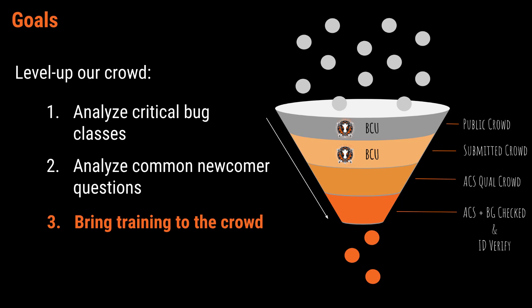ACS stands for Automated Crowd Selection — it's our algorithm used to choose researchers who get private program invites. This algorithm includes factors such as average severity of your bugs, activity, and trust metrics built when you start working with Bug Crowd. You can also get into other tiers by specializing in certain types of programs, background checking yourself, and ID verifying yourself.